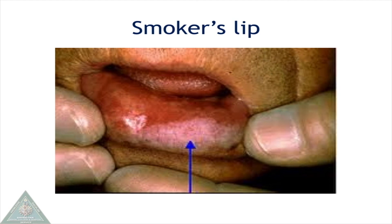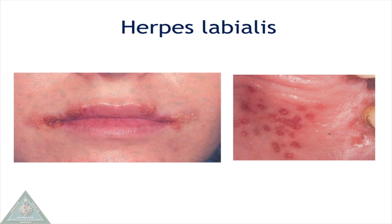Smoker's lip is found often in smokers and is characterized by a non-scrapable white patch found in the lower lip along with surface wrinkling. Herpes labialis is caused by type 1 herpes simplex virus and is the secondary form of the infection, characterized by vesicles and ulceration.